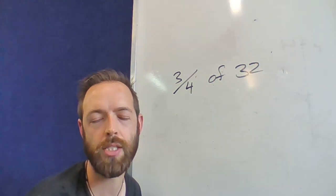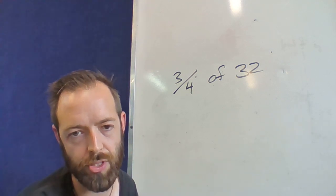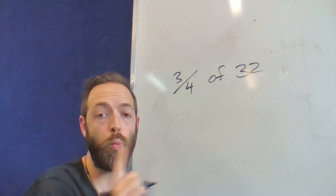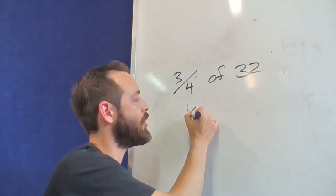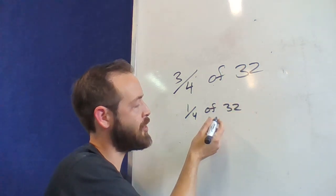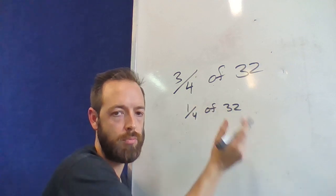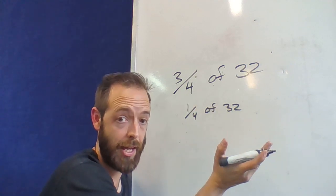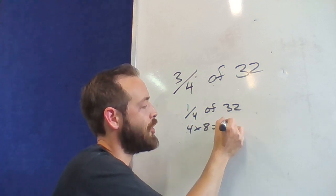It's a two-step process. First thing you need to do is, using your times table knowledge, work out what one unit fraction of it is, in this case one quarter. One quarter of 32 is going to be the same as 32 divided by 4, or 4 times 8, correct? 4 times 8 equals 32.